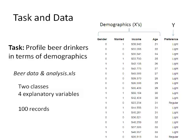Here's that same dataset from last time. Now instead of doing prediction, I might want to do profiling. As a beer manufacturer, I'm trying to understand the demographics of people who prefer light beer versus regular beer. Why would I care? If you know a certain neighborhood has these demographics and people prefer regular beer, you might advertise differently or use different channels depending on age. So definitely, advertising would be a great example of why you'd want to profile.